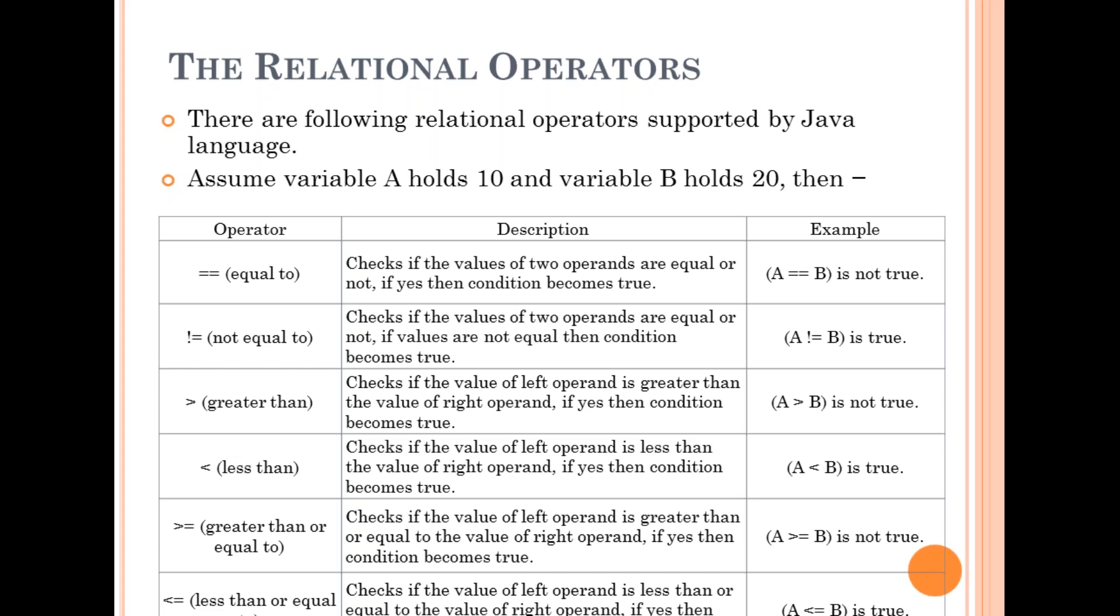Greater than or equal to checks if the value of the left operand is greater than or equal to the value of the right operand. If yes then condition becomes true.